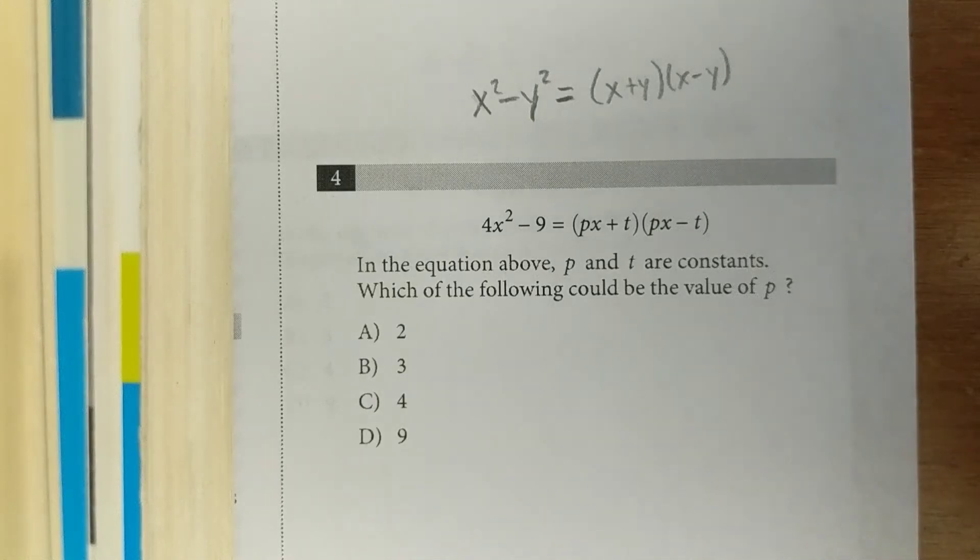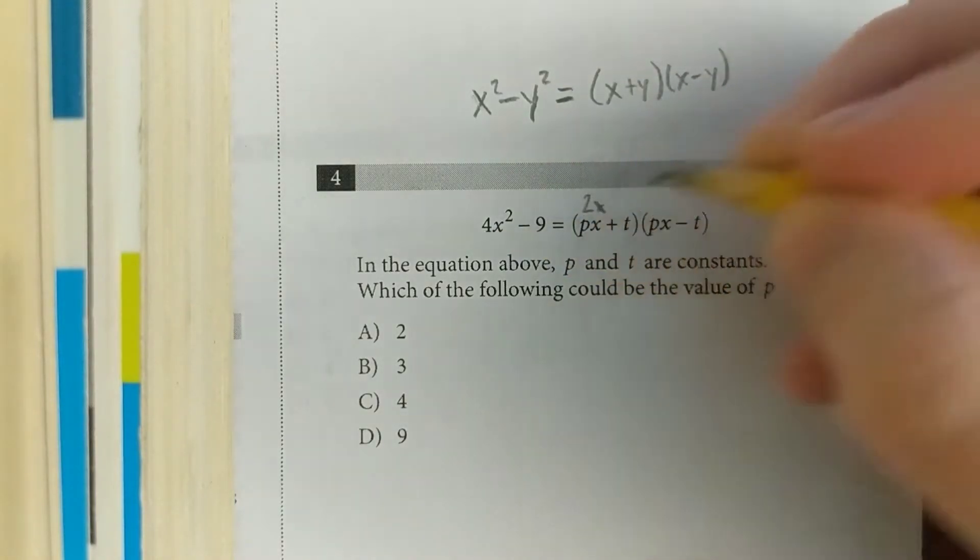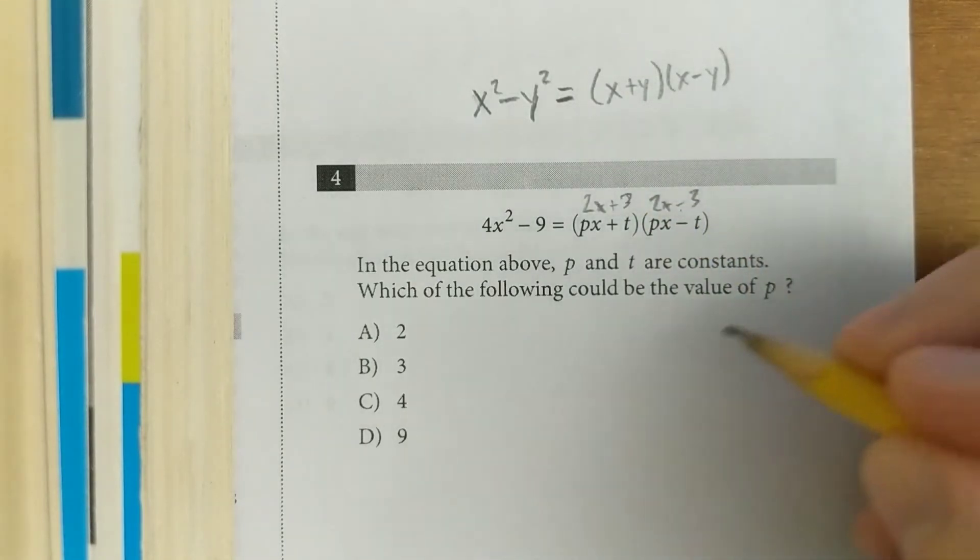Here's another example of the difference of two squares. The square root of 4x squared is 2x, the square root of 9 is 3, so we've got (2x + 3)(2x - 3). It asks what could be the value of p, so it's just 2.